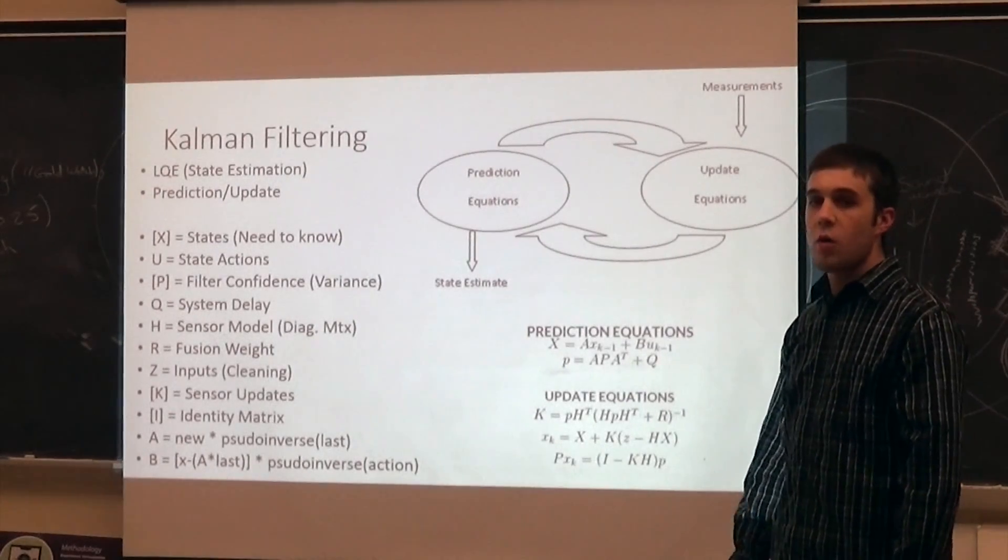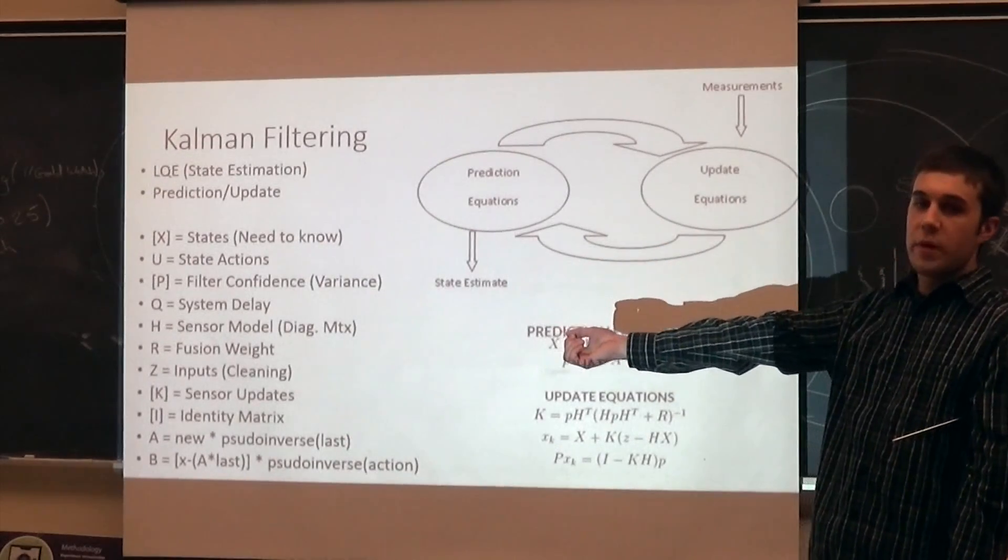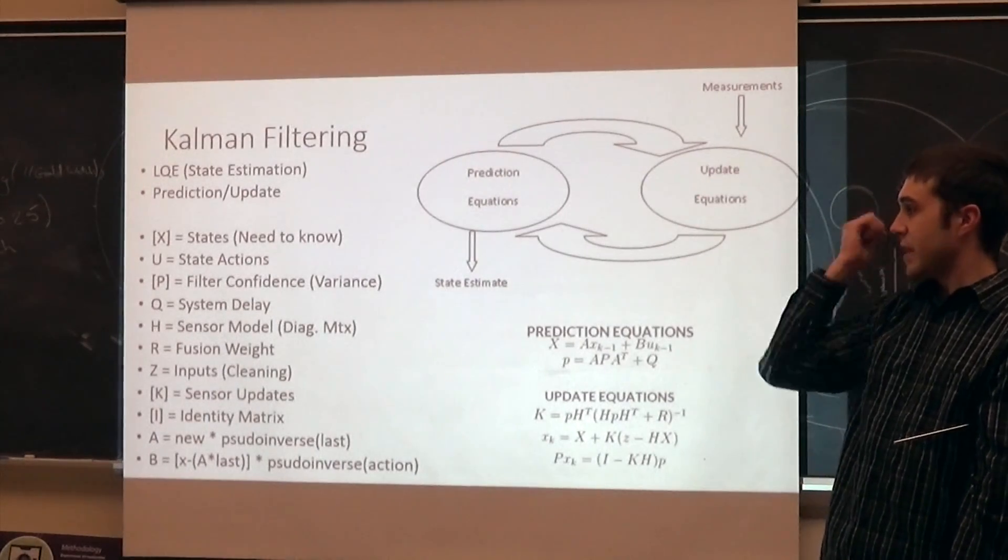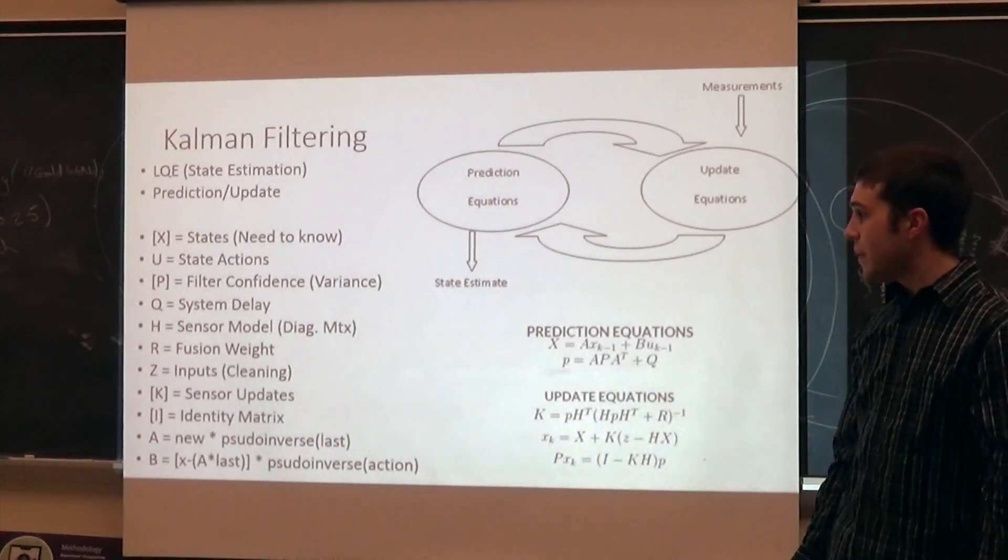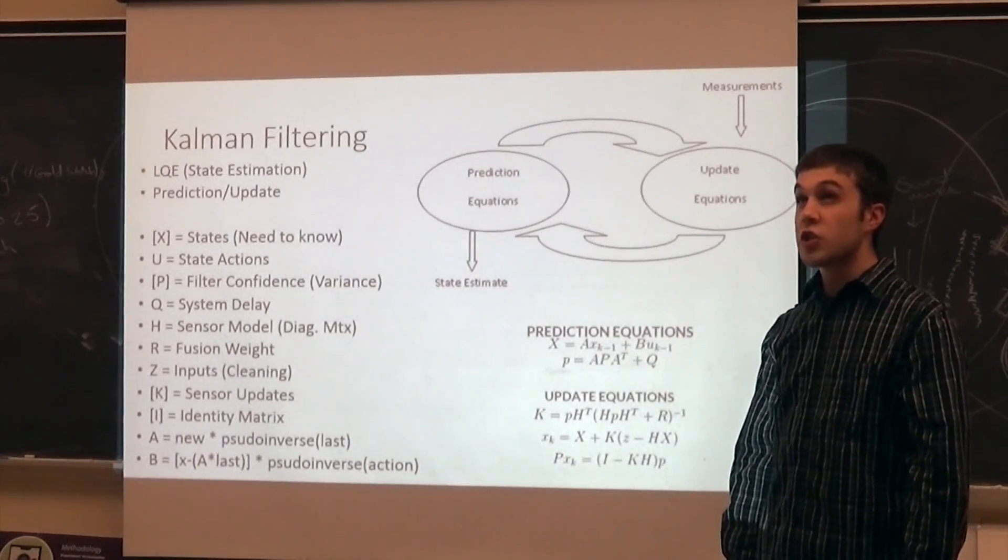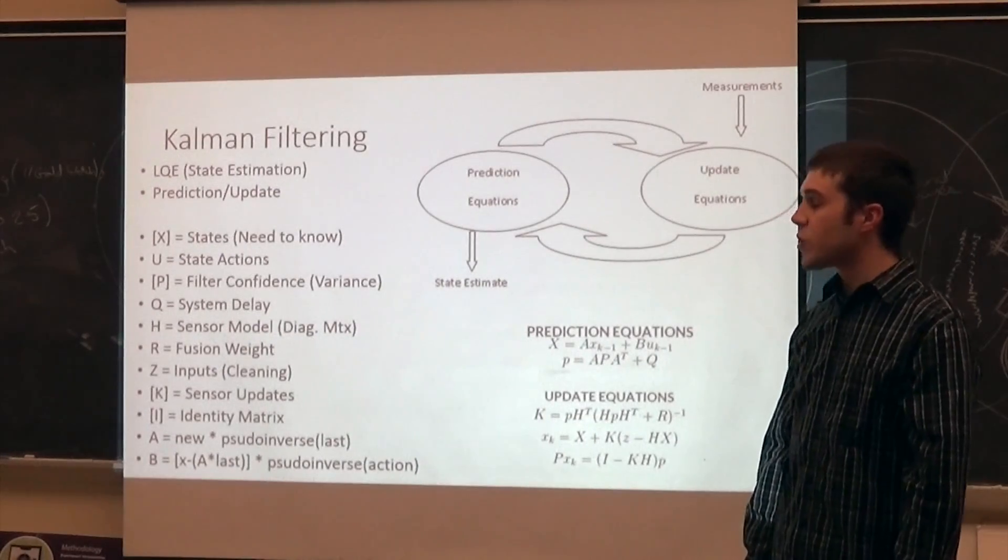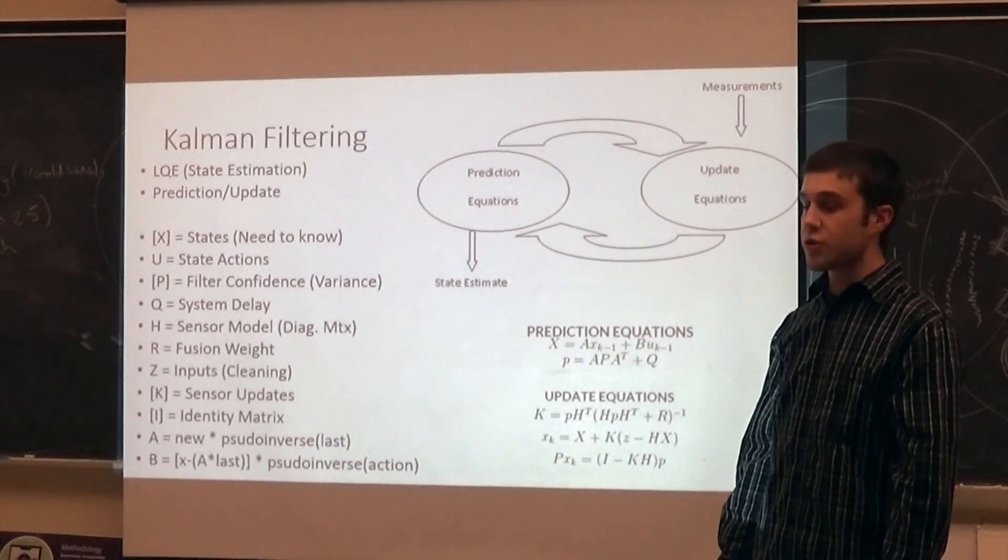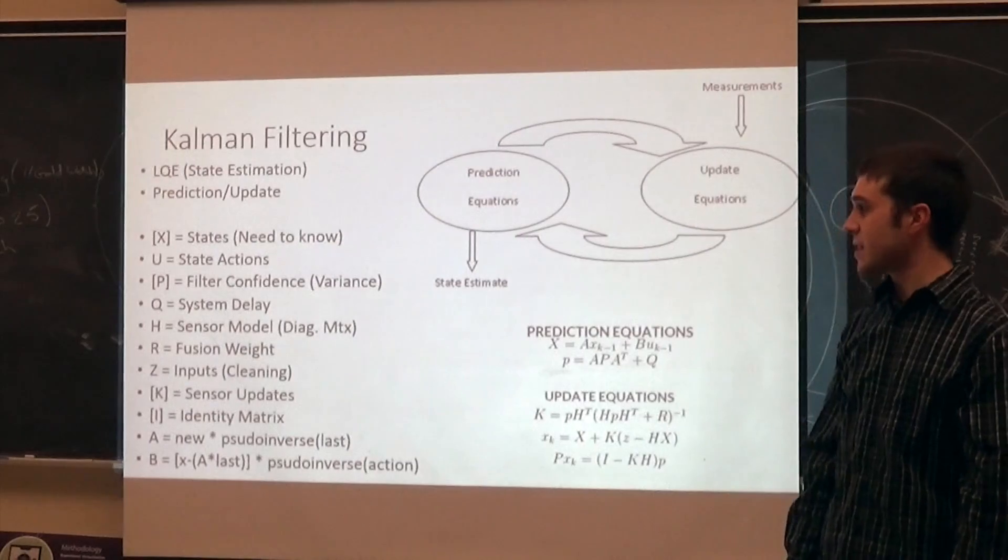U are the state actions. Basically, the way it was explained was when the arm is fully open, what voltage does it need to do that? When it's halfway, what does it need to do that? And then, what does it need to be here? That's kind of self-explanatory. P is another matrix, and it's the filter confidence. The filter decides what it's confident in and what it's not. Basically, how much the signal is varying. Could you trust it? That's actually really interesting. Q is a system delay, and it's basically, when the commands are sent versus when it actually happens on the device.